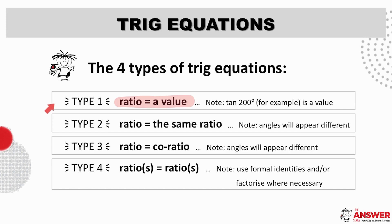Type 2 is where you have a ratio equaling the same ratio, but where the angles appear different. Type 3 is when the ratios are co-ratios of each other. And type 4 is where you get a combination of ratios, potentially on both sides of the equation. Let's have a look now at the worked examples for each of these situations.